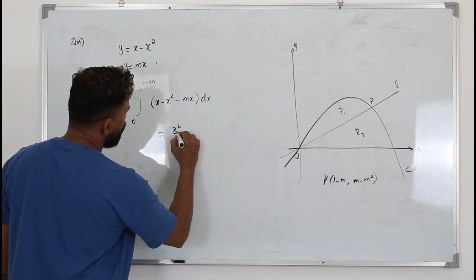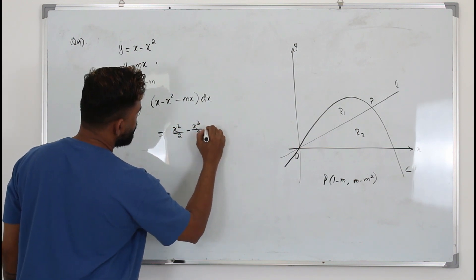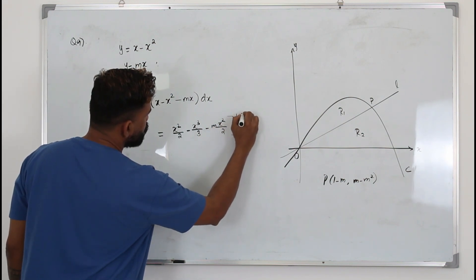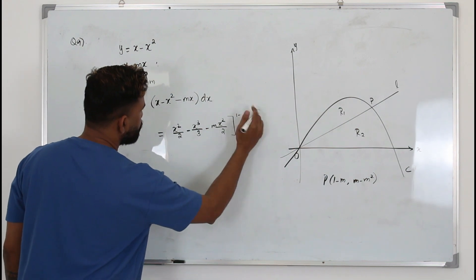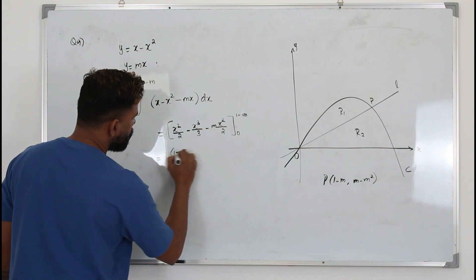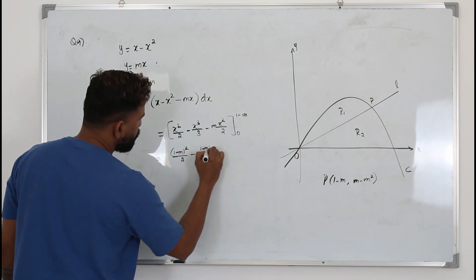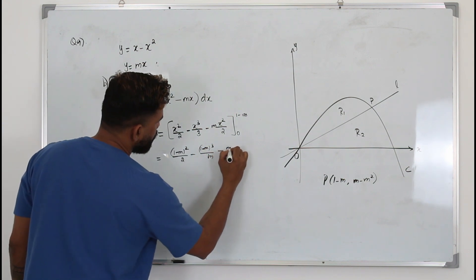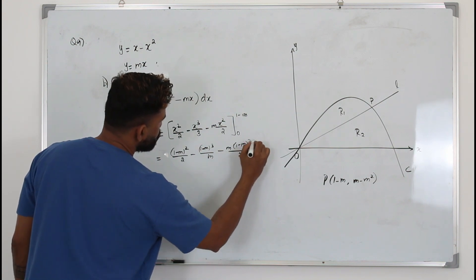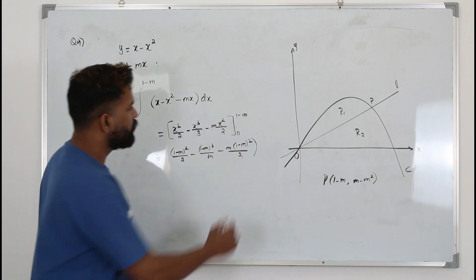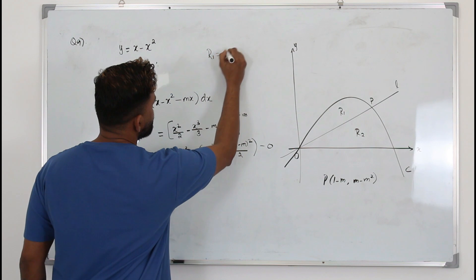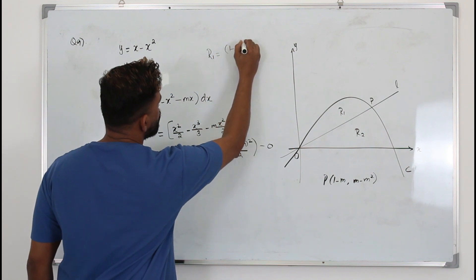Integrating gives x squared over 2 minus x cubed over 3 minus m times x squared over 2, with limits 0 to 1 minus m. Substituting: (1 minus m) squared over 2, minus (1 minus m) cubed over 3, minus m times (1 minus m) squared over 2. They want us to prove that area R1 equals (1 minus m) cubed over 6.